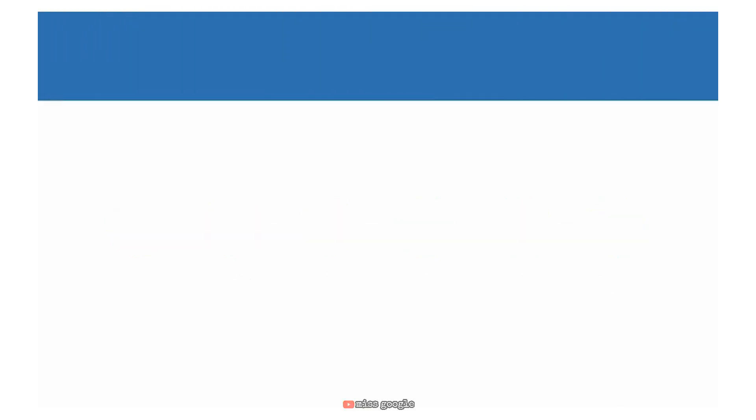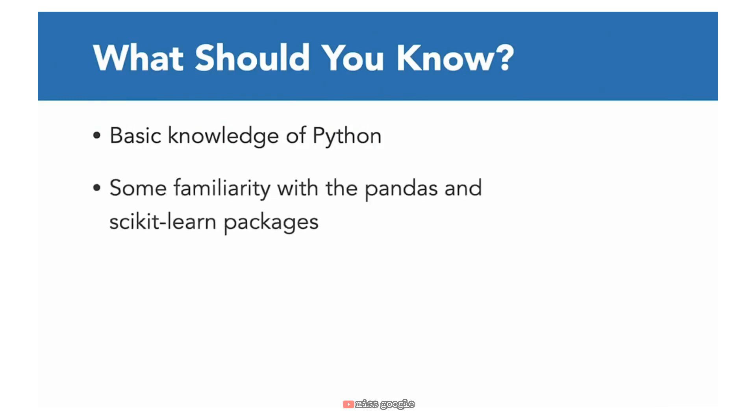Before we get started, let's go over some of the background knowledge that you should have in order to get the most out of this course. First, it would be helpful if you have some entry-level knowledge coding in Python. I will assume that you know how to import a Python package, refer to attributes of an object, and call the methods of an object. Next, it would also be helpful if you have some familiarity with the pandas and scikit-learn packages. If you don't, no worries — I will explain exactly what I'm doing when we use these packages in the course.